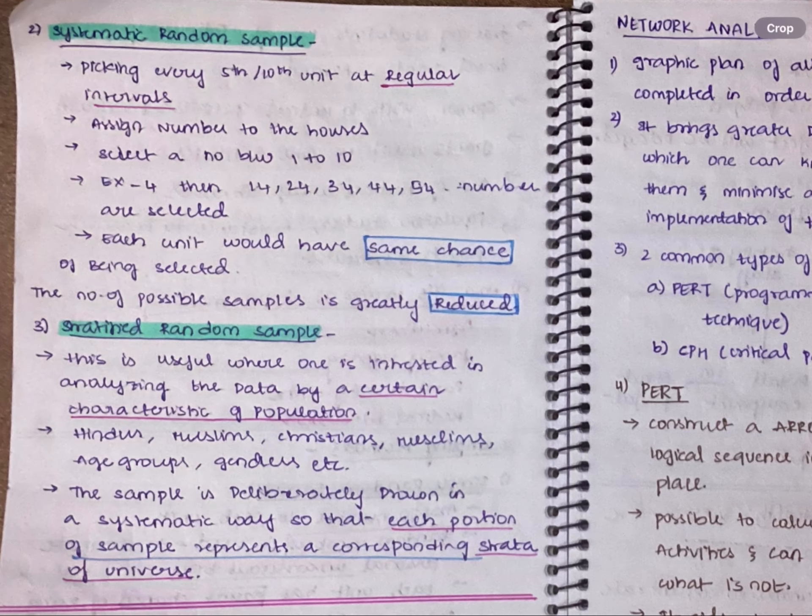Coming to the second one, which is systematic random sample. Imagine you have gone to some village and there are 60 houses in the village. We will assign number to every house and select a number from 1 to 4 just based on your imagination. Suppose it is 4.